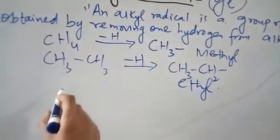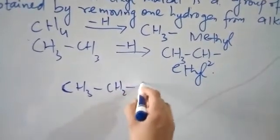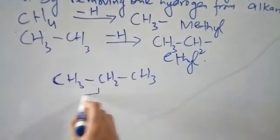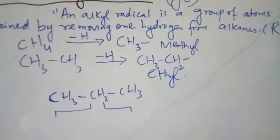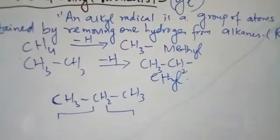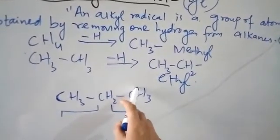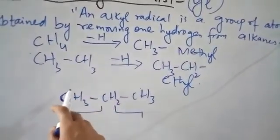Similarly, the molecular formula for propane is CH3-CH2-CH3. When we remove hydrogen from this, there are two possibilities. We have to see how many positions we can remove hydrogen from — we can remove hydrogen from the first carbon, the second carbon, or the third carbon.